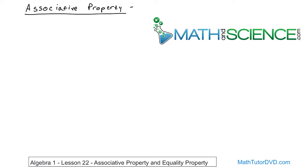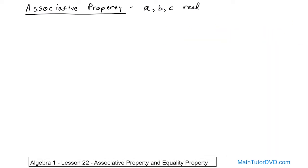The associative property involves three numbers, A, B, and C, and they all have to be real. What does the associative property say? It says the following: parentheses A plus B, plus the third number C, is equal to A plus parentheses B plus C.